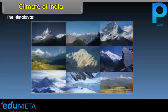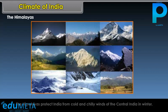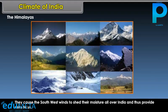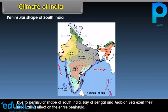The Himalayas protect India from the cold and chilly winds of central Asia in winter. They cause the southwest winds to shed their moisture all over India and thus provide rains. Due to the peninsular shape of South India, the Bay of Bengal and Arabian Sea exert their moderating effect on the entire peninsula.